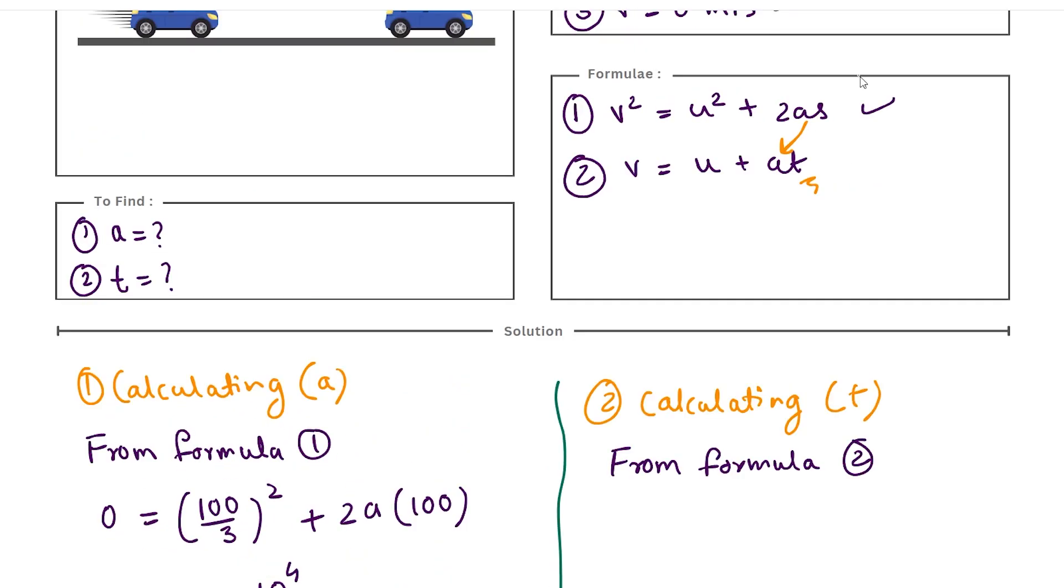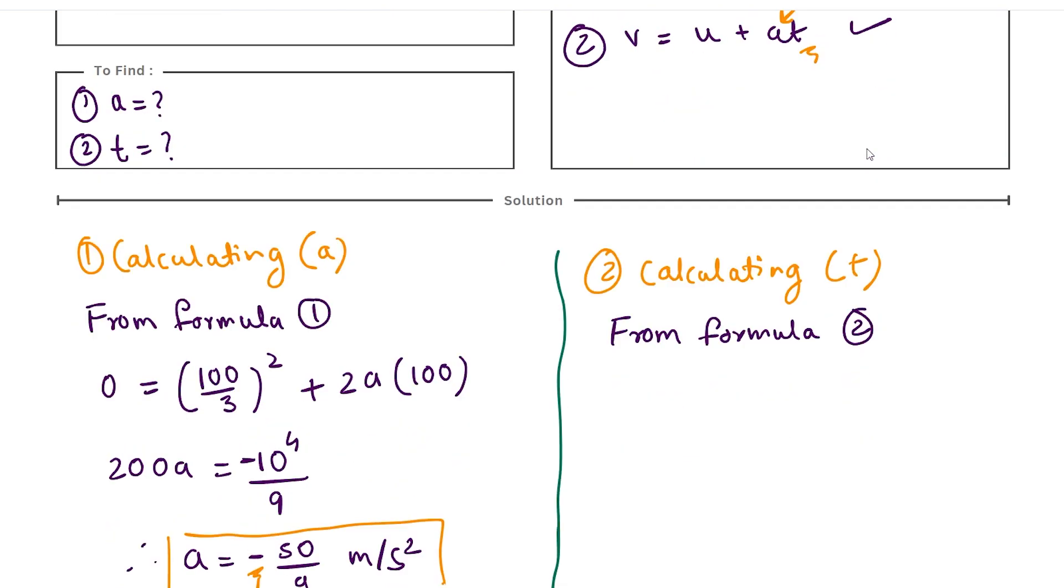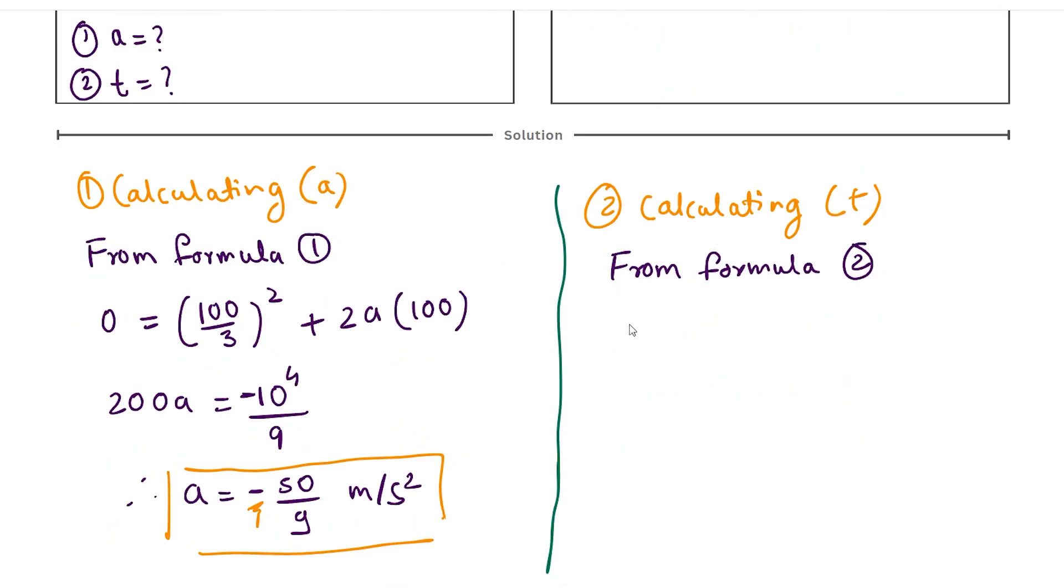We'll write from formula second. We have this formula, we substitute all the values. As all values are known to us, V is 0, U is 100 upon 3, A we just calculated is minus 50 by 9 times T. If we solve it further, time comes out to be 6 seconds.